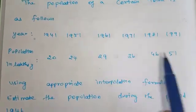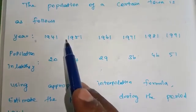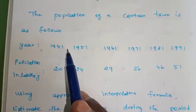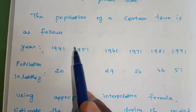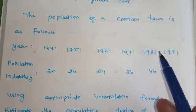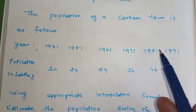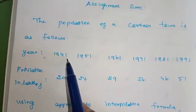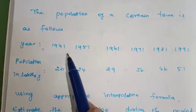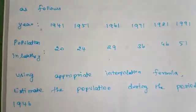1946 is the starting value, so we will use Newton's forward table. 1946 — since this is near the beginning of the data, we will use Newton's forward formula.